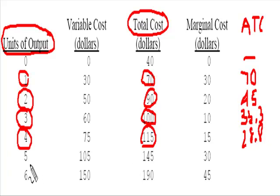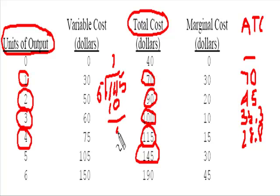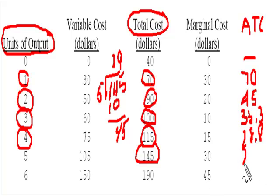At the fifth level of production, we have 145. 5 goes into 145: 5 goes into 14 twice, and 2 times 5 is 10, and that leaves 45. And 5 goes into 45 nine times. So we have 29 right here.